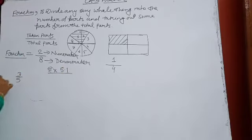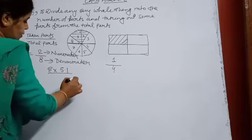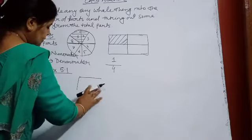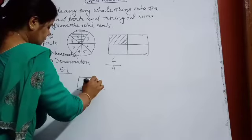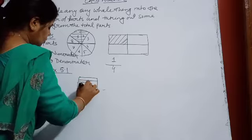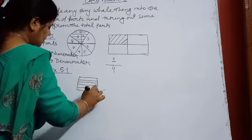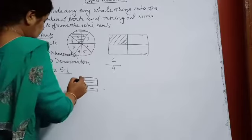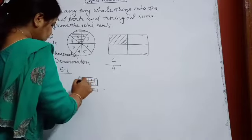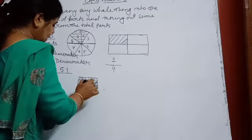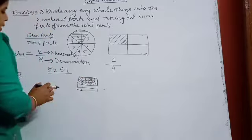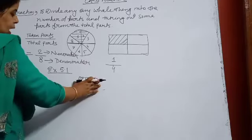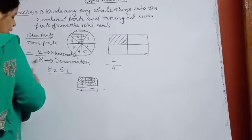To represent 3 upon 5, we will take a square. We will divide it into 5 parts: 1, 2, 3, 4, 5. Out of 5 parts, how many parts do you have to take out? 3 parts. So I have shaded those 3 parts. This will represent your 3 upon 5 — the whole thing divided into 5 parts and out of 5 parts, 3 parts taken out.